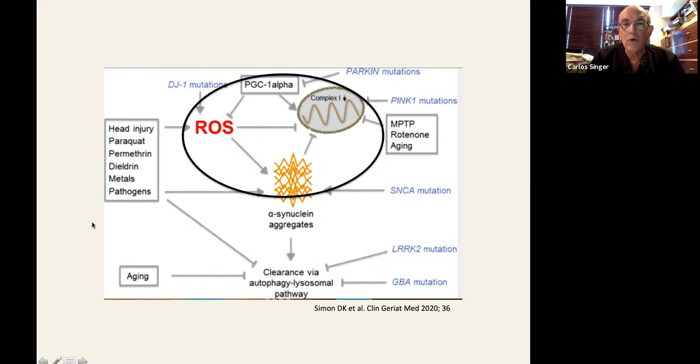So alpha-synuclein is increased in the expression. It's misfolded and it aggregates. And when it is in this form, in and of itself, it also generates further oxidative stress. So it acts as a toxic agent, if you will, inside the neuron.